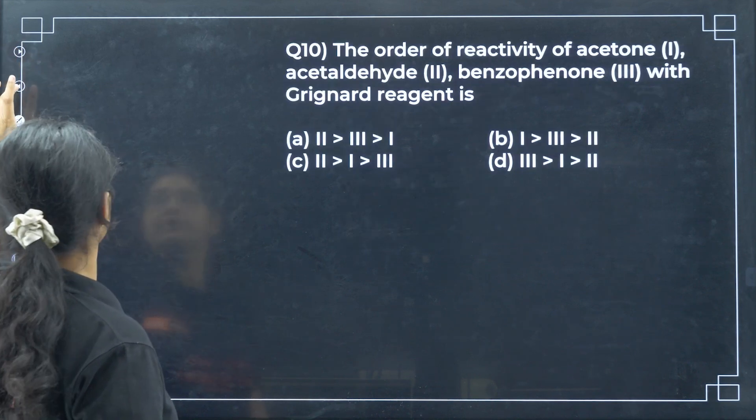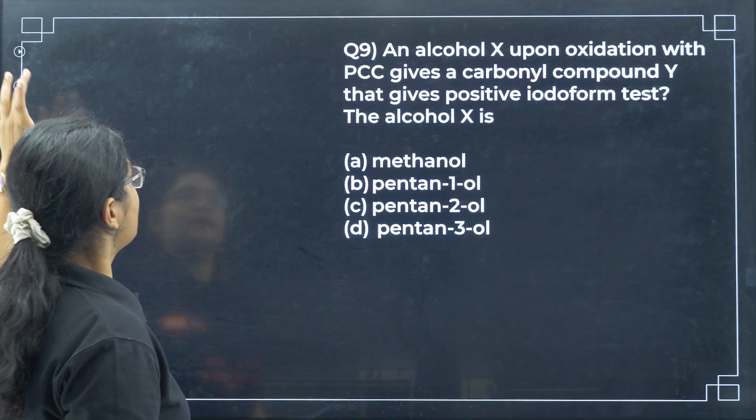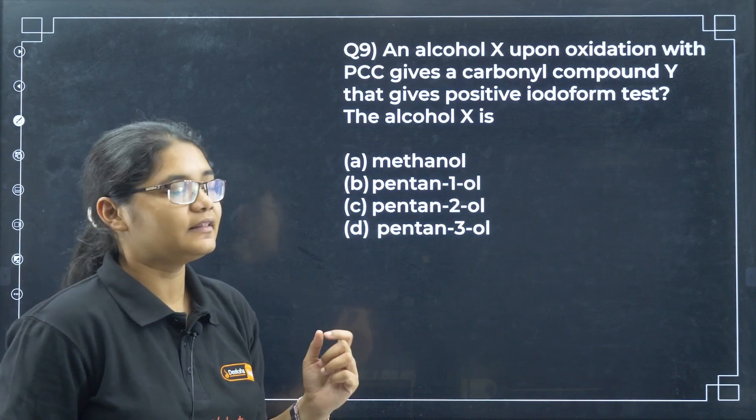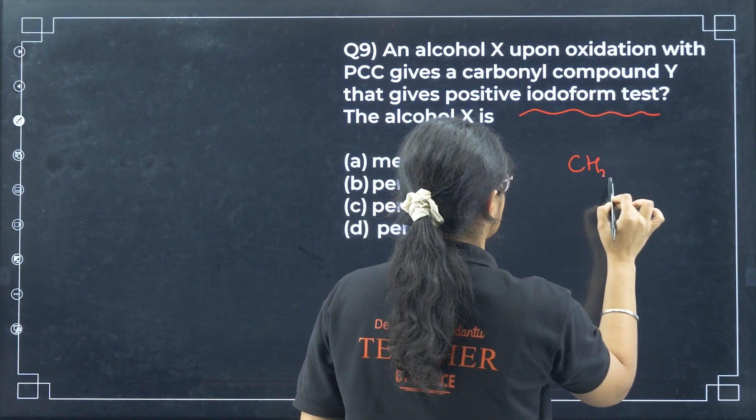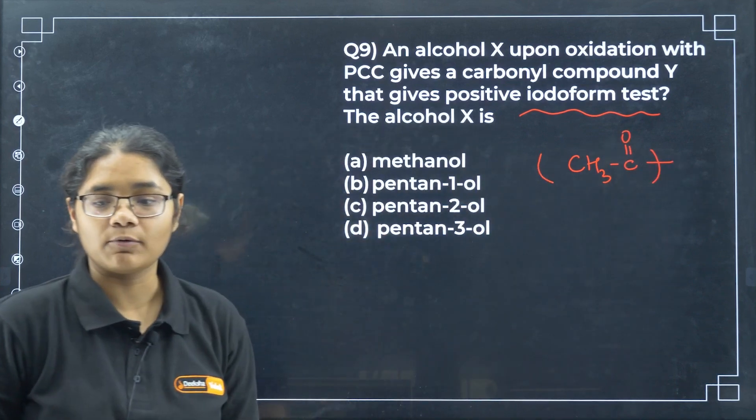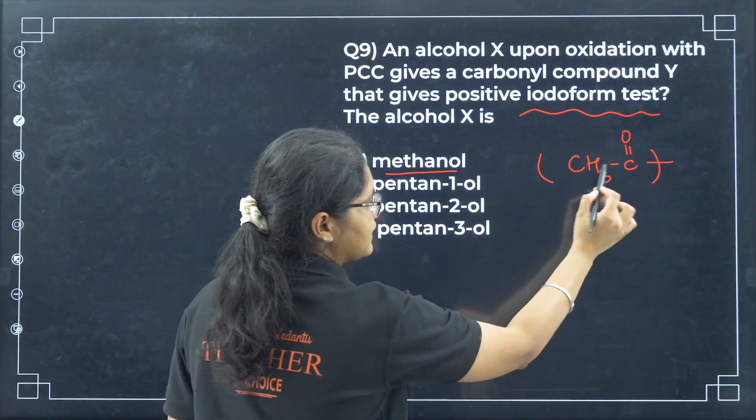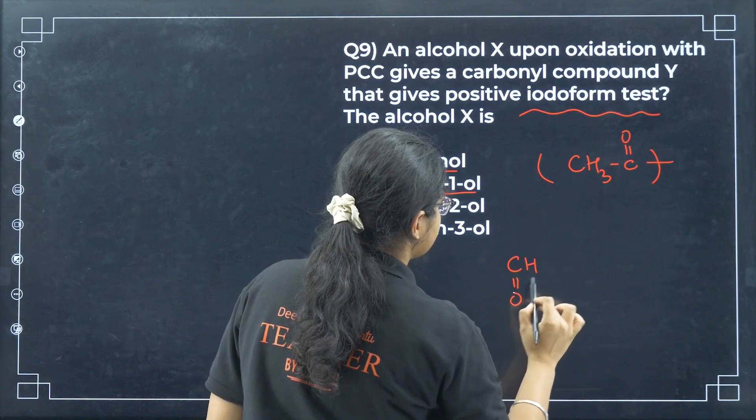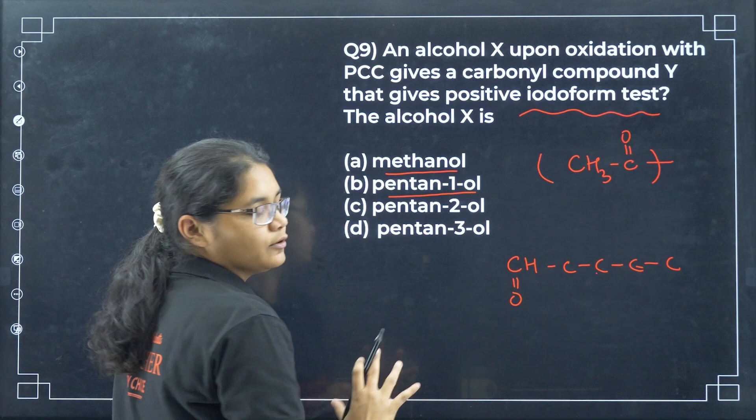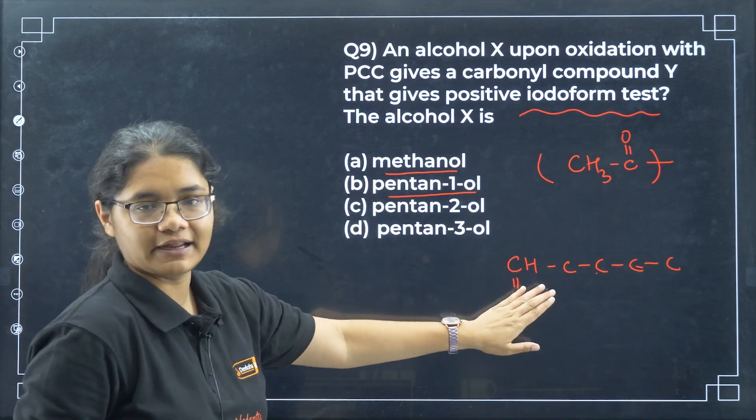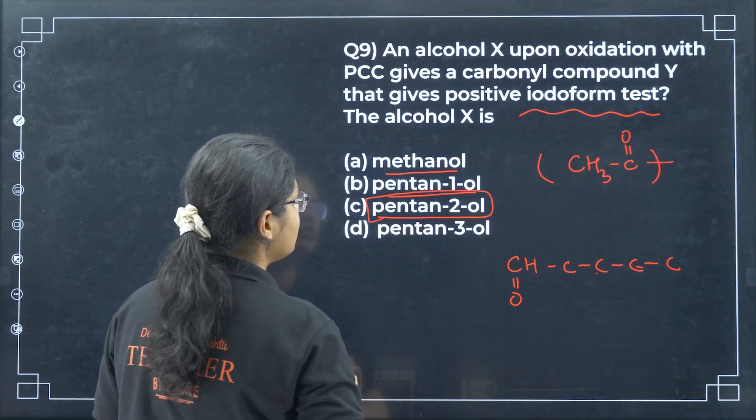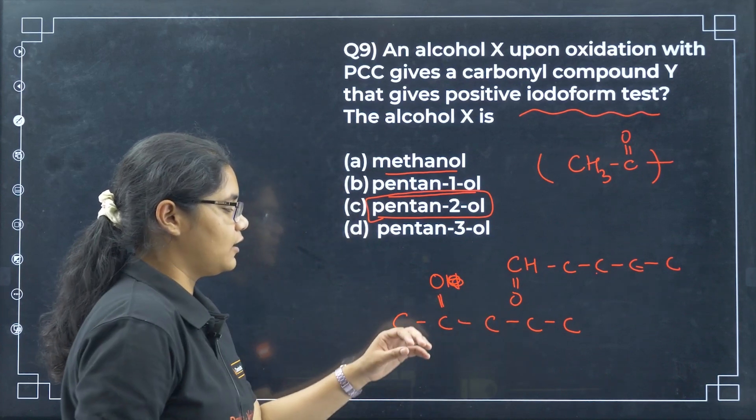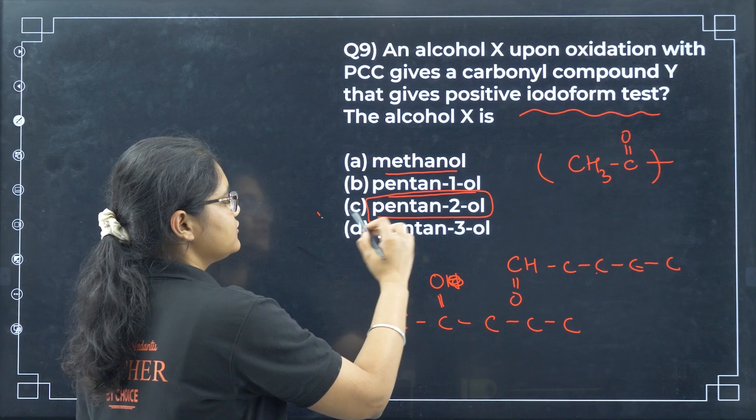Next, upon reductive ozonolysis of 2-methyl-but-2-ene, the compounds obtained are. If I have 2-methyl-but-2-ene and I'm breaking this double bond, I will attach one oxygen on this side and one oxygen on this side. So I will get acetone and ethanol. Option D. Next, we have an alcohol X that upon oxidation with PCC gives a carbonyl compound Y that gives positive iodoform test. For positive iodoform test, you need to have CH3CO group. If this group is present, then I will get positive iodoform test.